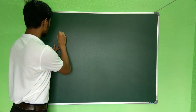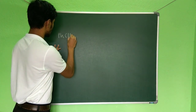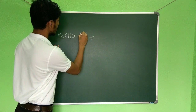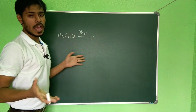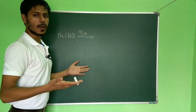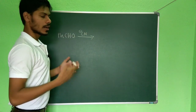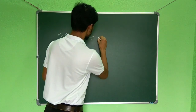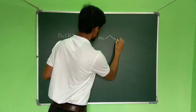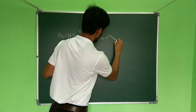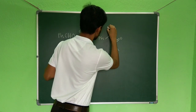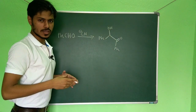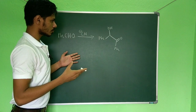In the question, starting from benzaldehyde, sodium cyanide (CN⁻) was given. When sodium cyanide reacts with benzaldehyde — as I have already discussed — this forms benzoin. This is the structure of benzoin, and this step is called benzoin condensation.